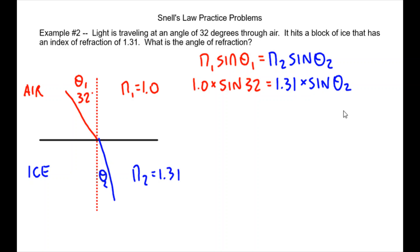So now we have to do math to get that angle 2 by itself. So the left side comes out to be sine of 32 times 1 is 0.53, equals 1.31 times the sine of angle 2. Divide both sides by 1.31. 0.405 is the sine of angle 2.